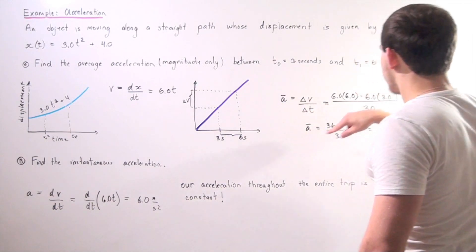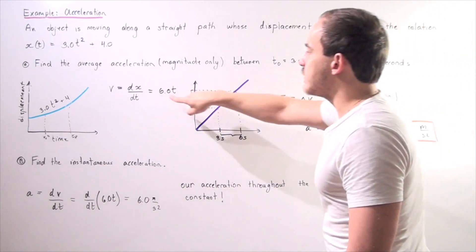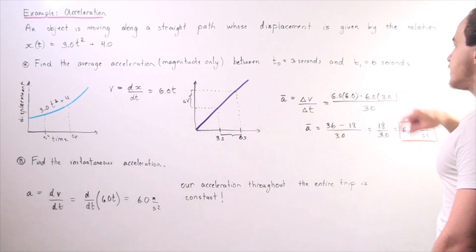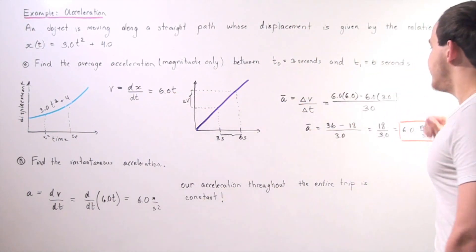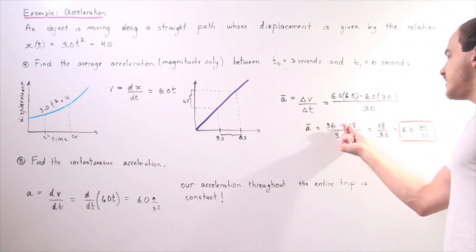So at time equals 6 seconds, we have 6 × 6 = 36. At time equals 3 seconds, we have 6 × 3 = 18. So we have 36 - 18, which is 18 on top, and 3 on the bottom. 18 divided by 3 is 6.0 meters per second squared for our average acceleration.